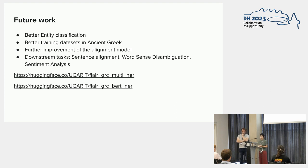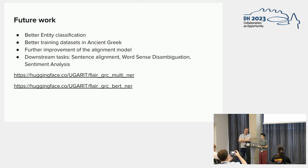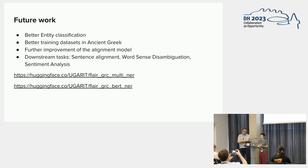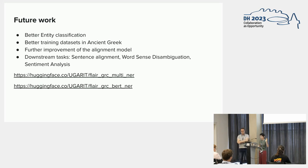Our future work focuses on better entity classification — something more focused than miscellaneous — and developing new datasets for ancient Greek, exchanging data with people who have annotated texts. We badly need new annotated texts, new named entities, and more training corpora for the alignment model, since being multilingual it performs better the more we add. Downstream tasks we want to test include sentence alignment, word sense disambiguation, and sentiment analysis.